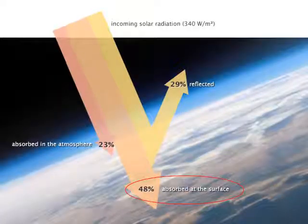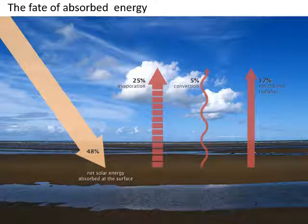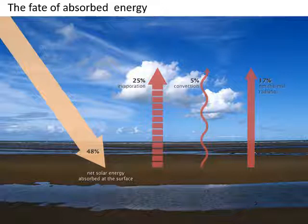We've talked about albedo controlling how much incoming radiation is reflected — about 30%. Now let's talk about what happens to the radiation that is absorbed. This schematic gives an idea of the fate of absorbed energy. 48% of incoming solar radiation reaches the Earth's surface. About half of that again — 25% — is used to drive evaporation: latent energy used up by the process of evapotranspiration. Then 5% drives convection, which is movement of heat in the atmosphere. In the end, only 17% of incoming solar radiation is re-emitted as longwave thermal radiation — so only 17% has capacity to heat the planet.